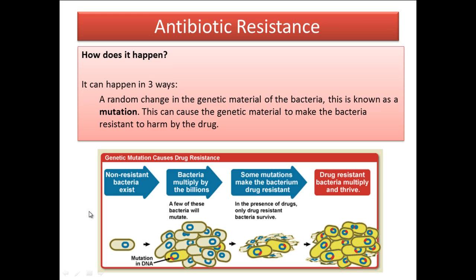One way to produce resistant strains of bacteria is to simply take antibiotics. You can pretty much guarantee that by taking antibiotics, you are going to end up with resistant strains. When bacteria reproduce, some of those will mutate, and some of those mutations may potentially lead to drug resistance. By taking the drugs, you actively promote the ones that are resistant to survive.